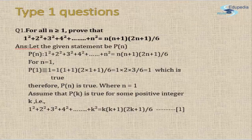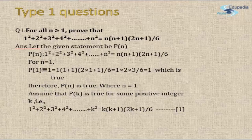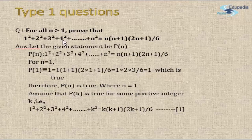Let's look at the first type. For example: for all n greater than or equal to one, prove that one squared plus two squared plus three squared, all the way up to n squared, equals n times (n+1) times (2n+1) divided by six. This is the statement you have to prove, and this is the basis you have to work with.